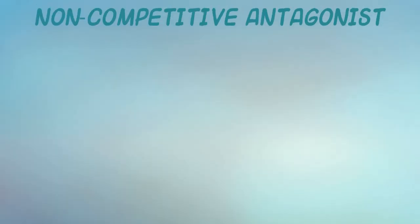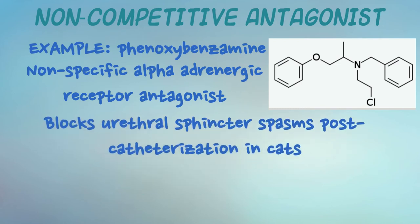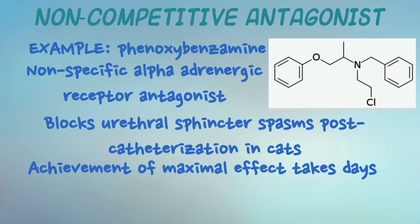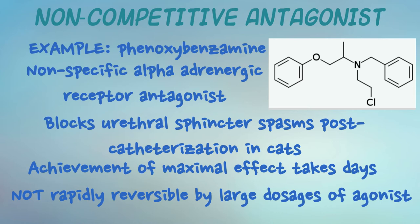A small number of drugs are considered noncompetitive antagonists. The best example in veterinary medicine is the alpha-adrenergic receptor antagonist phenoxybenzamine, which is used most commonly for post-catheterization urinary spasms in cats. This drug interacts with the receptor and after a time covalently binds to it. The clinical relevance is that this takes some time for the drug to have its maximal action. However, once it has its maximal action after several days, adding more agonists cannot compete with the drug and move it off the receptor, so the maximal effect that could be achieved is reduced, just like you'd see with the lowering of receptor numbers. Only synthesis of new receptors will accomplish returning that maximal effect to pre-antagonist levels.